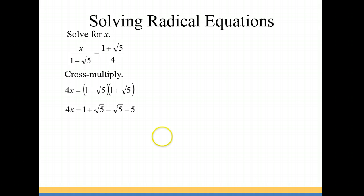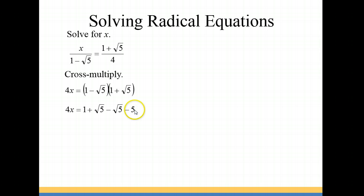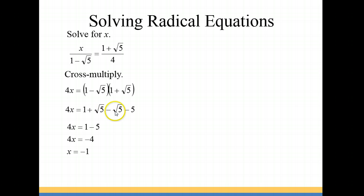Which is our next step. Multiplying our first terms together: 1 times 1. Then 1 times √5. Then negative √5 times 1. And negative √5 times positive √5 gives us negative √25, or negative 5. Now we're going to combine like terms. Our inner and outer terms cancel — these two terms are actually conjugates of each other, so it gets rid of the radical for us.